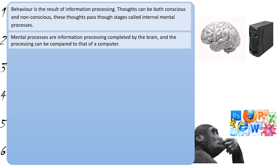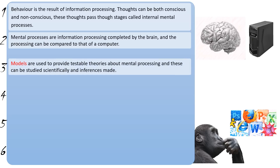One thing we'll look at in some depth in cognitive psychology is the use of models. A model is made about the structure of internal mental processes. Once this model is constructed, we can think up testable theories and run experiments to see if each of the aspects of the mental process acts as we would expect it to. We're also going to talk about schemas.